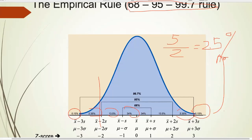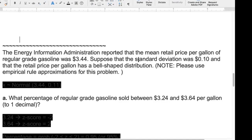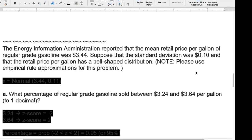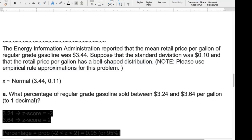Now let's work on the gas price problem. The regular gas price per gallon is about $3.44, with a standard deviation of $0.10. We also know that the gas price has a bell-shaped distribution — this is very important, because it means we can use the empirical rule. The question specifically asks you to use the empirical rule. Write down all the given information: X represents gas price, with that mean and standard deviation.